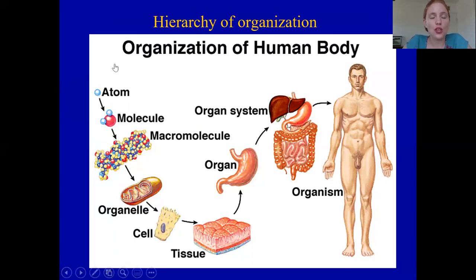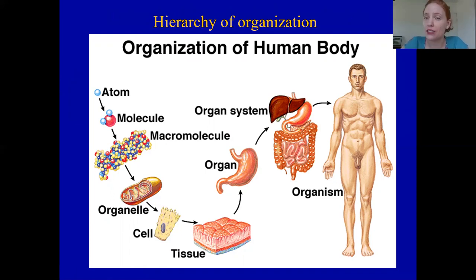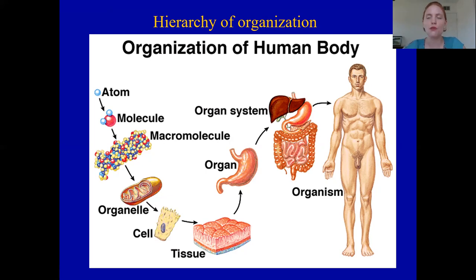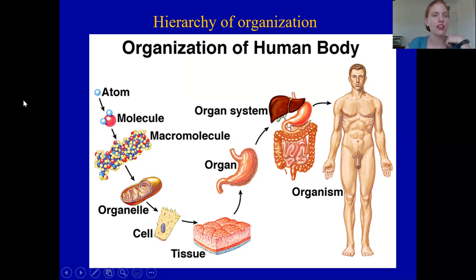Okay, let's go through it. We're going to start with an atom. An atom is the smallest piece of any particular substance or element. If you've ever seen a periodic table, it lists different elements with different chemical properties. If you take any one of those elements and get the smallest possible piece of it, that's an atom. For example, carbon or hydrogen — one atom of hydrogen is an atom.